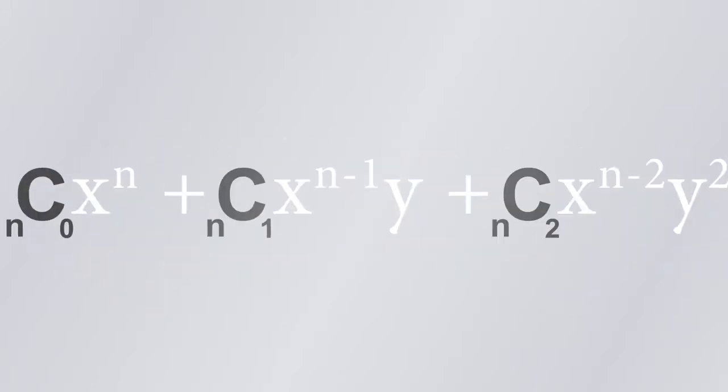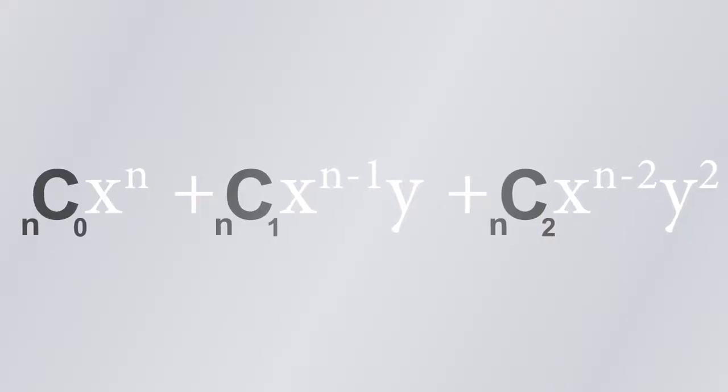Each one of these terms will have a number in front of it, a coefficient which tells you how many times that quantity appears when you do this expansion. And those coefficients are exactly these binomial coefficients. The bi in binomial refers to the fact that we have these two quantities, x and y, that we're doing an expansion of.